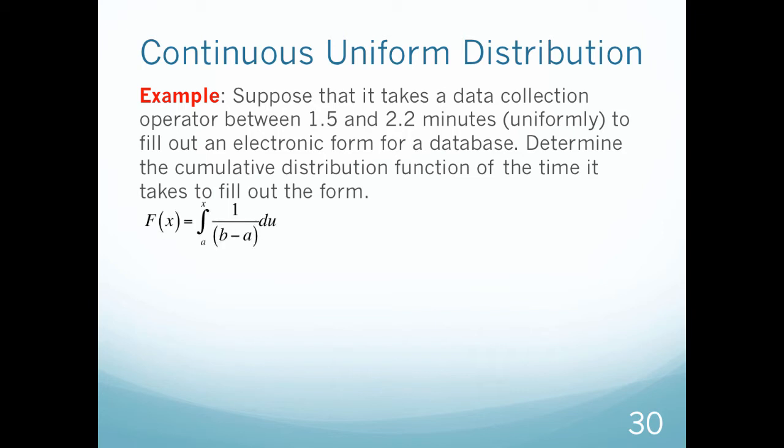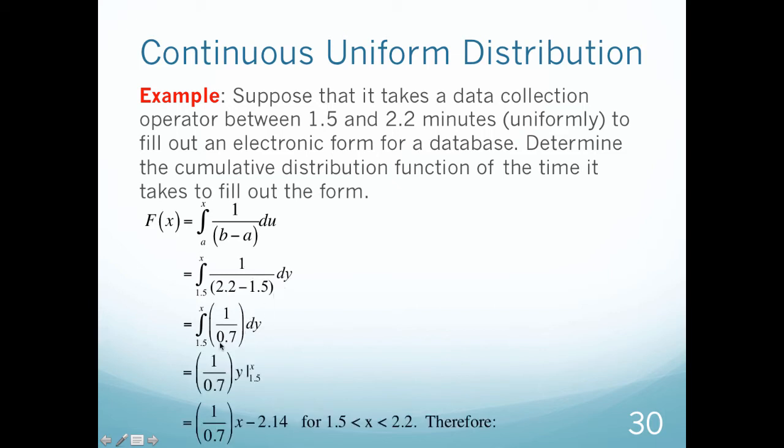I have this formula as my cumulative distribution function for a continuous uniform distribution. I plug in my values, from 1.5 to x from my lower limit to x, and then I fill in b and a. I'm going to integrate this to get my function, and I'm going to get that my function equals 1 over 0.7x minus 2.14 when x is between 1.5 and 2.2.